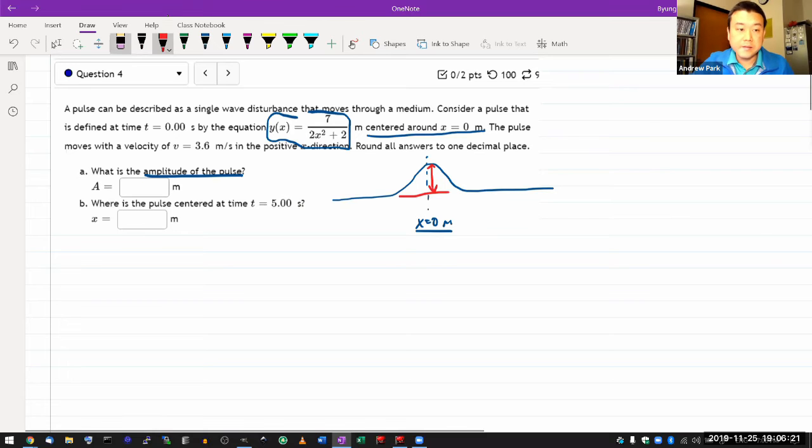Then once you understand that, then it's relatively easy to look at this expression here and recognize that in addition to the fact that the question statement says it's centered around x equals zero meters, you're looking at this function itself